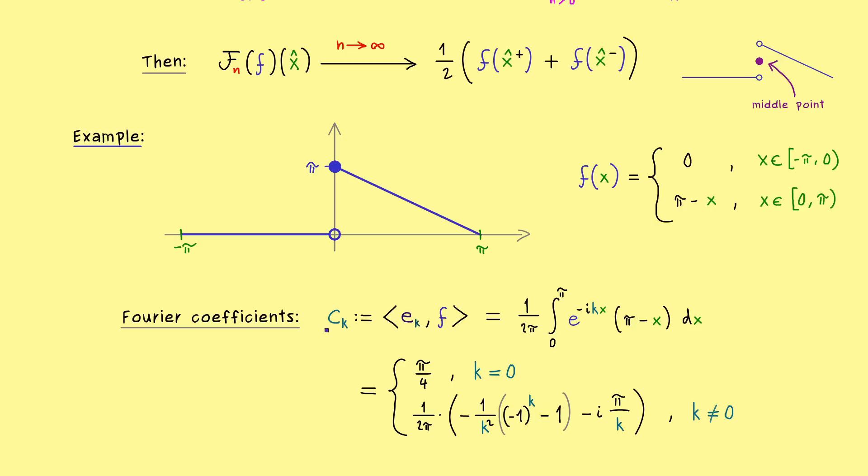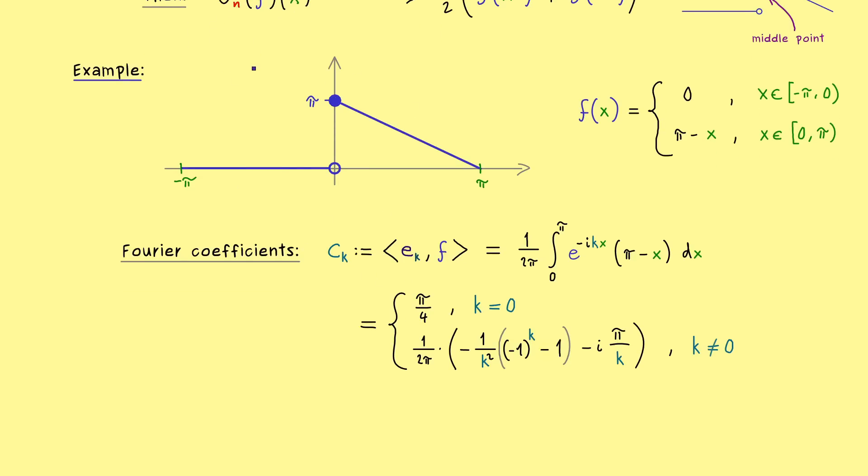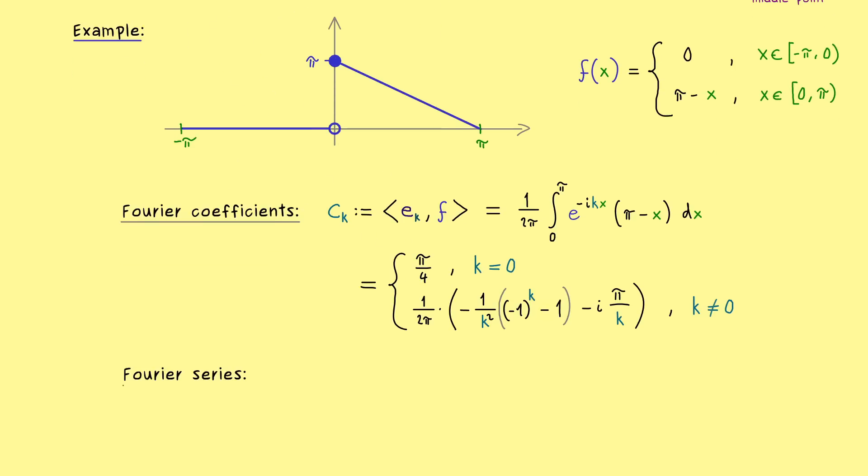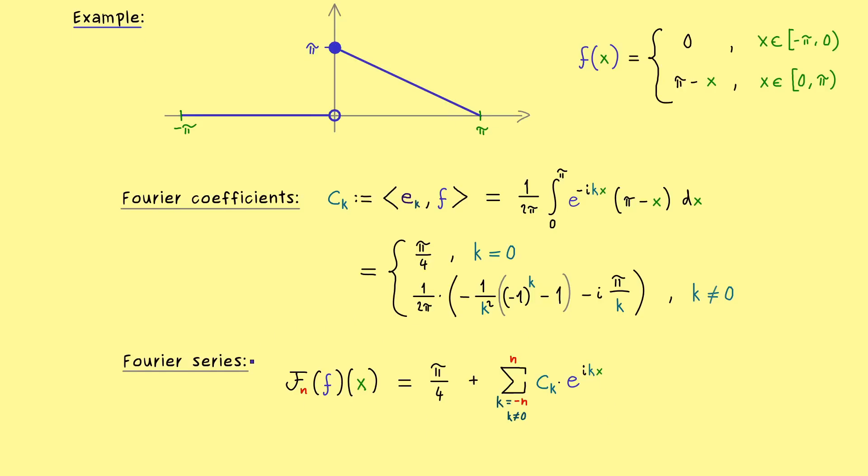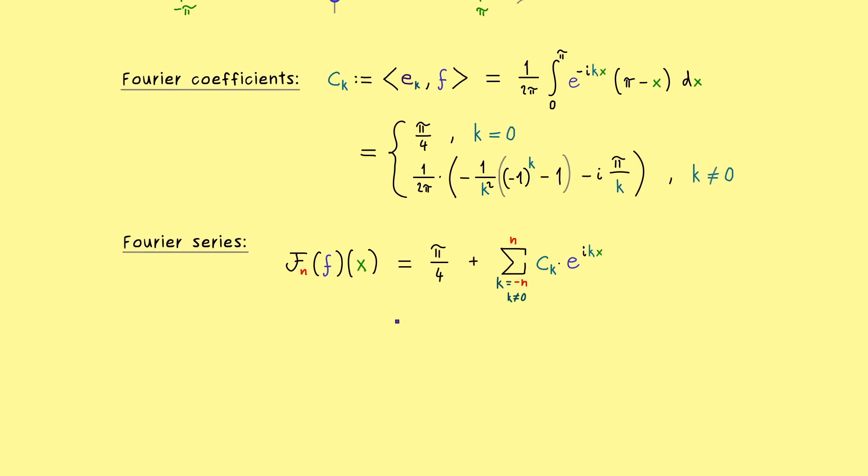And that's it. Now we have all the Fourier coefficients, which means we can form our Fourier series. So I would say for every natural number n, let's write down the function we get here. This means it's a well-defined finite sum that starts with the constant π over 4. And then we just add up all the exponential functions from minus n to plus n. So in short, we just have c_k times e to the power ikx.